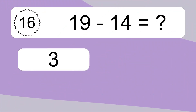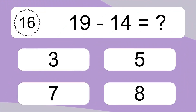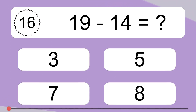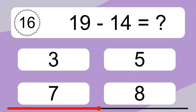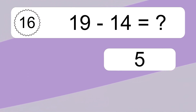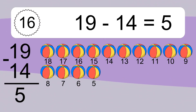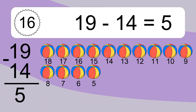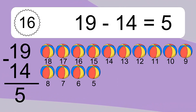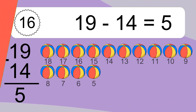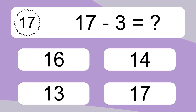19 minus 14 equals what? 19 minus 14 equals 5. Let's count it: 18, 17, 16, 15, 14, 13, 12, 11, 10, 9, 8, 7, 6, 5.